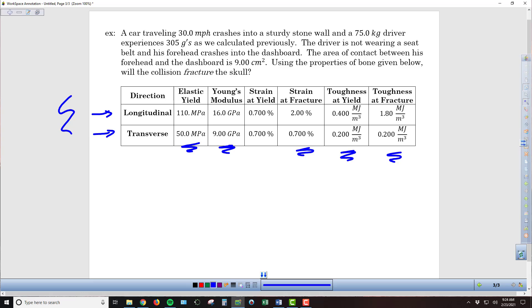Let's go back to the problem that we had studied before, where we have a car that's traveling 30 miles per hour. The 75 kilogram driver experiences 305 G's. This is the same scenario that we looked at in our previous notes. In this scenario here the driver's not wearing a seat belt, unfortunately, and the impact of the crash leads to the forehead crashing into the dashboard. The area of contact for the forehead on the dashboard is nine square centimeters.